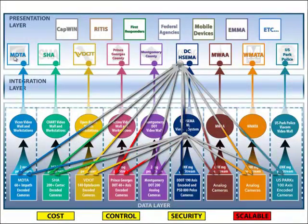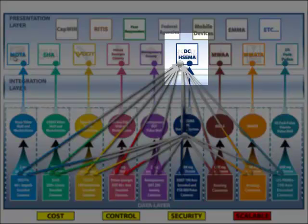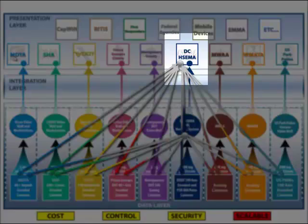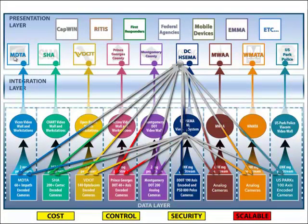The next slide is an example of the PSIM model. We use DC HSEMA as an example because they've implemented a PSIM model. The PSIM approach is very good from the standpoint of aggregating data and video. In this model, DCEMA is the aggregation point — a request goes down to their hub at the data layer, a request to the appropriate agency and camera is made, and that camera provides the feed back to DC HSEMA in the presentation layer. It is a good method for aggregating video and centralizing it at one point. However, the issue with this approach is serving it up to multiple users — it is not particularly friendly to that.